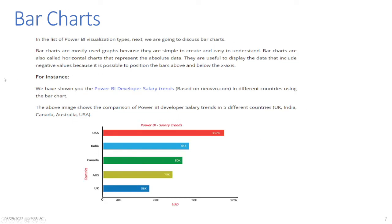Bar Charts: In the list of Power BI visualization types, next we discuss bar charts. Bar charts are mostly used graphs because they are simple to create and easy to understand. Bar charts are also called horizontal charts that represent absolute data. They are useful to display data that includes negative values because it is possible to position the bars above and below the axis. For instance, the bar chart shown here displays Power BI developer salary trends from Nuvo.com in different countries — UK, India, Canada, Australia, and USA — with the highest salary in the USA followed by India.